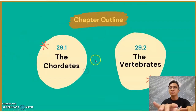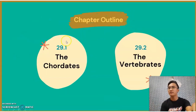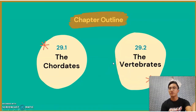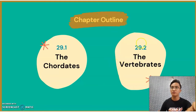For this chapter outline, section 29.1 on chordates, I'm going to explain about this. After me, section 29.2 on vertebrates will be explained by Kastina. If you want to follow along in your textbooks, turn to page 543.